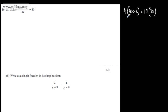So what we'll have then is 4 lots of 8x minus 2 will be equal to 10 lots of 3x. If I expand the brackets, I'm going to have 32x minus 8 will be equal to 30x. Subtracting the 30x from both sides and adding 8 to both sides, we're going to have 2x is equal to 8.